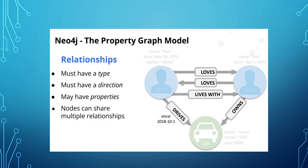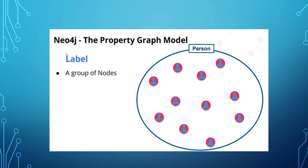Node one loves node two, and node two loves node one — you can see the direction of each. Also, this person lives with that person; the direction here shows this person owns their home and the other person lives with them. Direction is a mandatory and important concept in graph relationships.